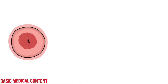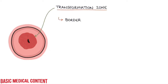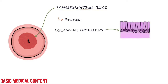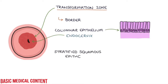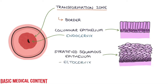Let's talk about the transformation zone. The transformation zone is the border between the columnar epithelium of the endocervix or the canal and the stratified squamous epithelium of the ectocervix, which is the outer area of the cervix that you can see on a speculum examination. The transformation zone is essentially a border between the two types of epithelium. When the transformation zone is located on the ectocervix, it's visible during a speculum examination as a well-demarcated border between the two epithelial types.